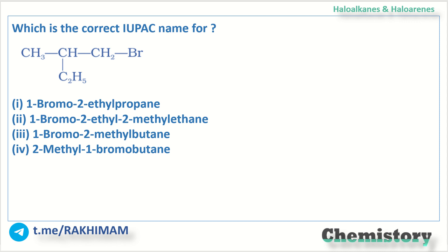The question is: what is the correct IUPAC name for the following compound? For IUPAC naming, we need to find the longest parent chain having the maximum number of carbon atoms. We need to number it from that particular side where the substituents get the lowest position numbers. First, we will be selecting the parent chain.